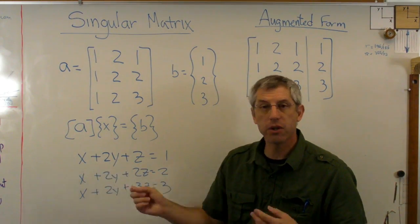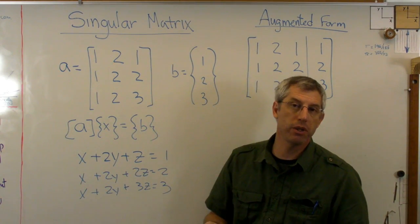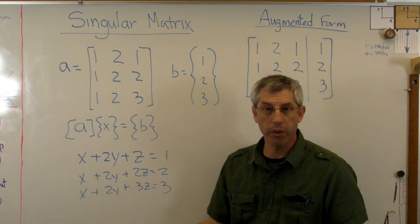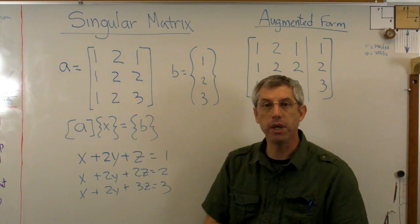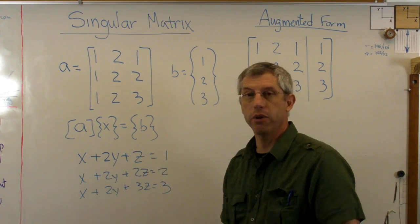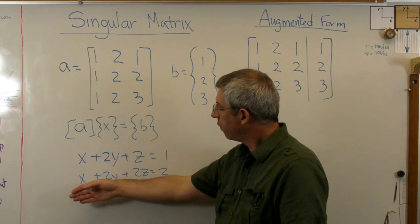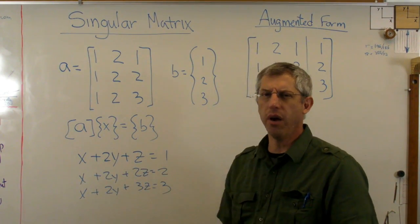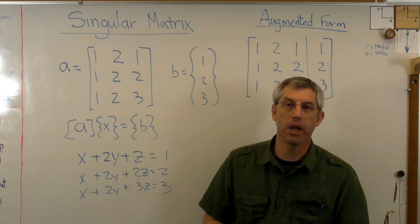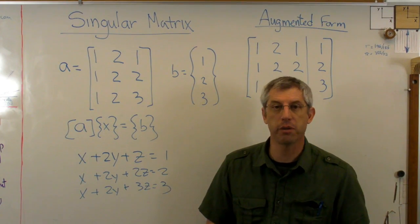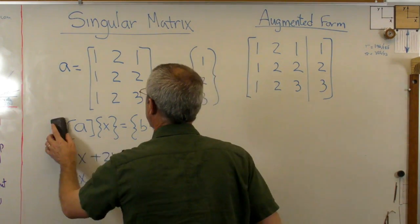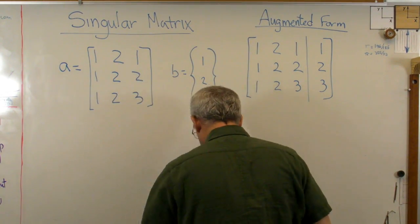So when I say I'm trying to solve this system of equations, what I'm really trying to do is I'm going to find values of x and y and z that make all three of these equations true. And geometrically speaking, what that means is I'm trying to find a point in three space where all three of those lines cross. Now, what if one of these equations was really just a combination of the other two? Geometrically, what that would mean is that at least two of those lines are parallel to each other, and there is no place in three space where they cross. That's the problem.